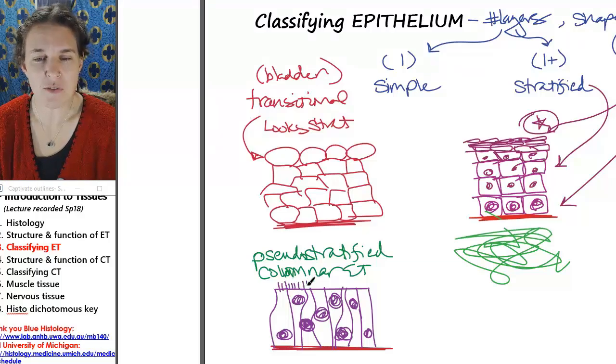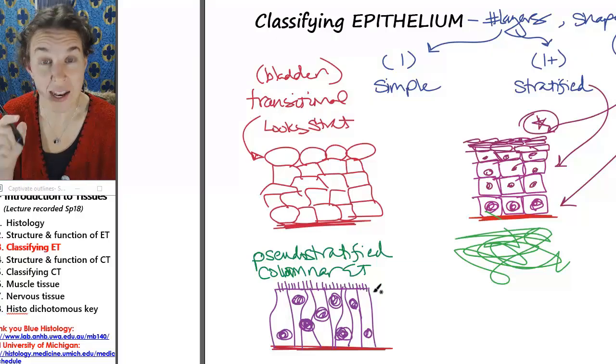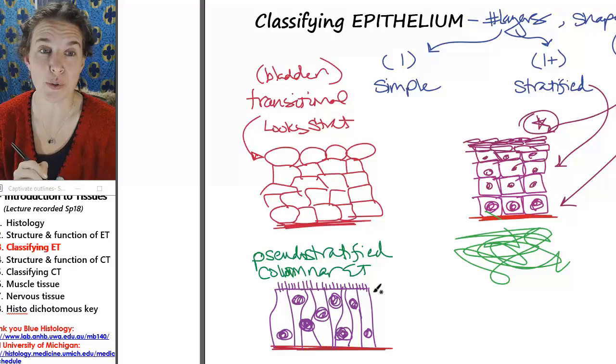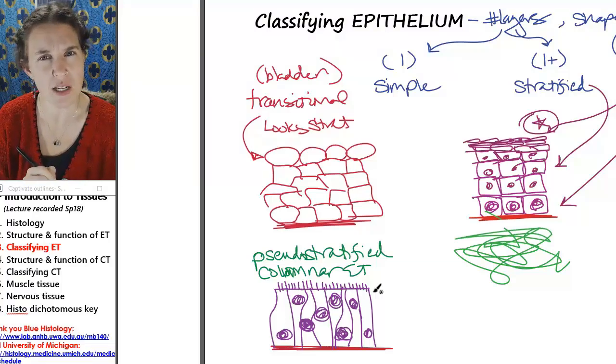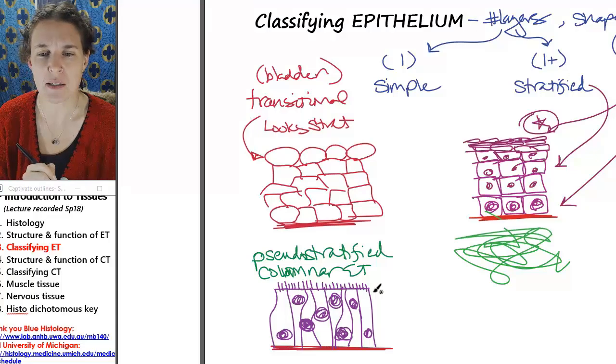Sometimes pseudostratified columnar epithelium is ciliated and that can also be a really nice clue that we actually don't have a stratified tissue here. It's a pseudostratified.